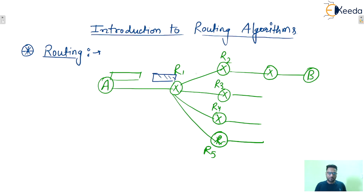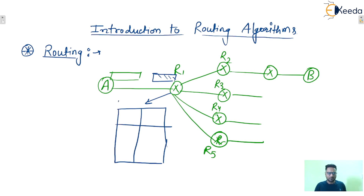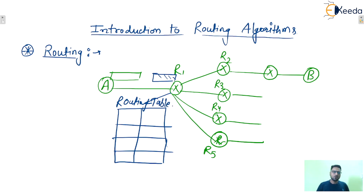Because of that, at R1, one routing table will be there. This routing table will be having so many entries. With the help of the routing table, a routing algorithm will be applied, and router R1 will get to know on which path this particular packet should be forwarded.